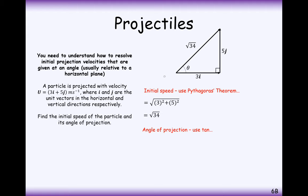And the angle of projection just use a tan angle, so it's going to be tan minus 1 of opposite over adjacent, 5 over 3, so that's 59 degrees. So the initial speed is going to be square root of 34 meters per second, and the angle of projection is going to be 59 degrees.